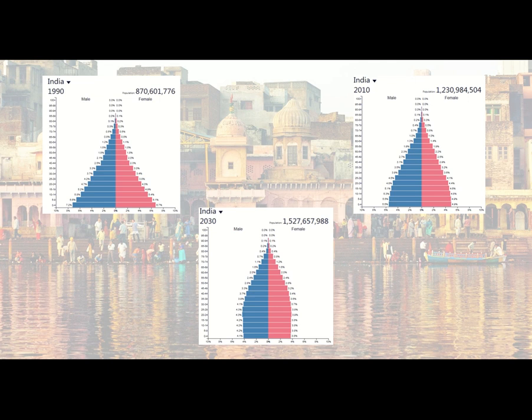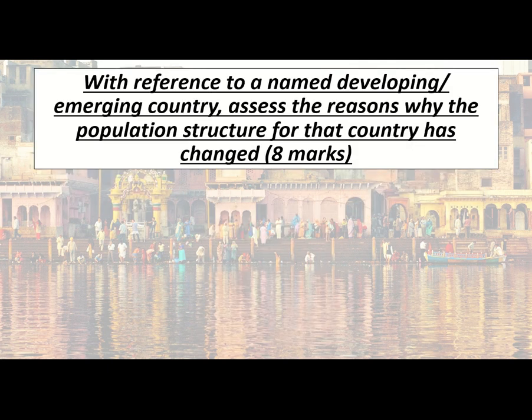Now that you've annotated the three pyramids in depth using the pages, you can use that resource to help you with the essay question. Like any eight-marker it's very wordy, but you need to practice picking apart these questions. The question says: 'With reference to a named developing or emerging country — India — assess the reasons why population structure for that country has changed.' You're telling me why India's population structure has changed, giving reasons, and then assessing which reason is most significant — that's your conclusion.